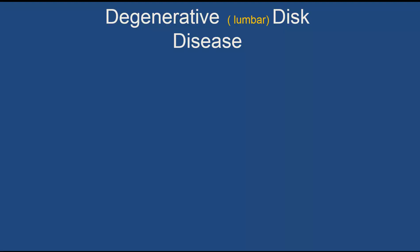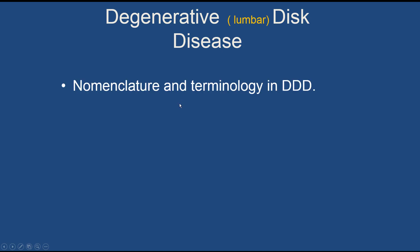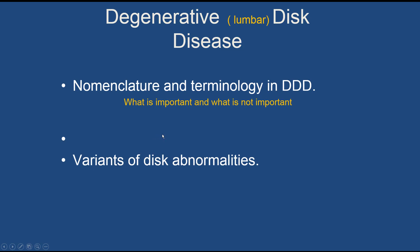I'm going to spend the next 15 to 20 minutes talking about some of the most basic elements of interpretation of degenerative disc disease. We'll concentrate just on lumbar disc disease because that is, after all, the most common indication for MR scanning in any practice. We will describe important nomenclature and terminology used in degenerative disc disease, including variants — entities that don't look like typical herniations but are actually a manifestation of degenerative disc disease.